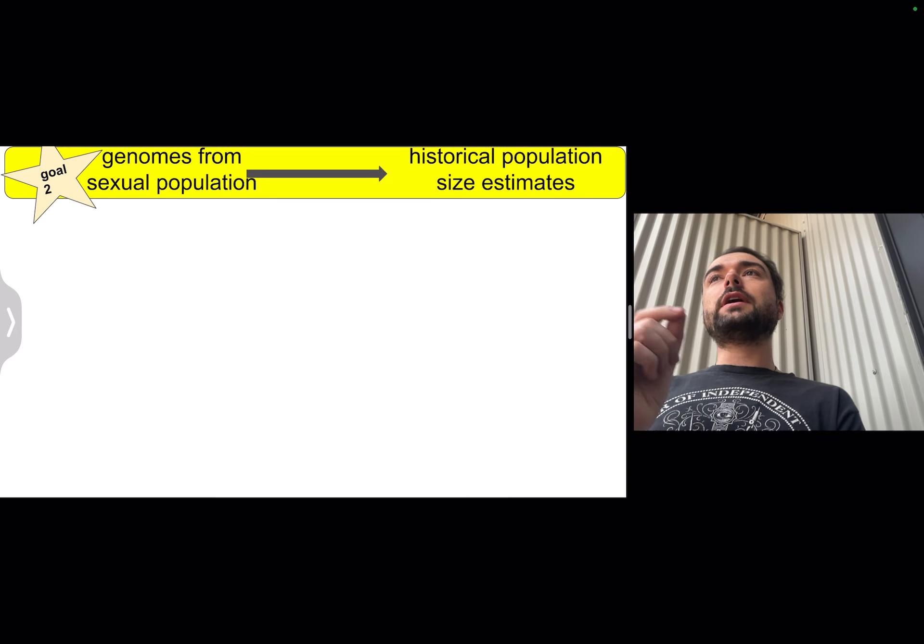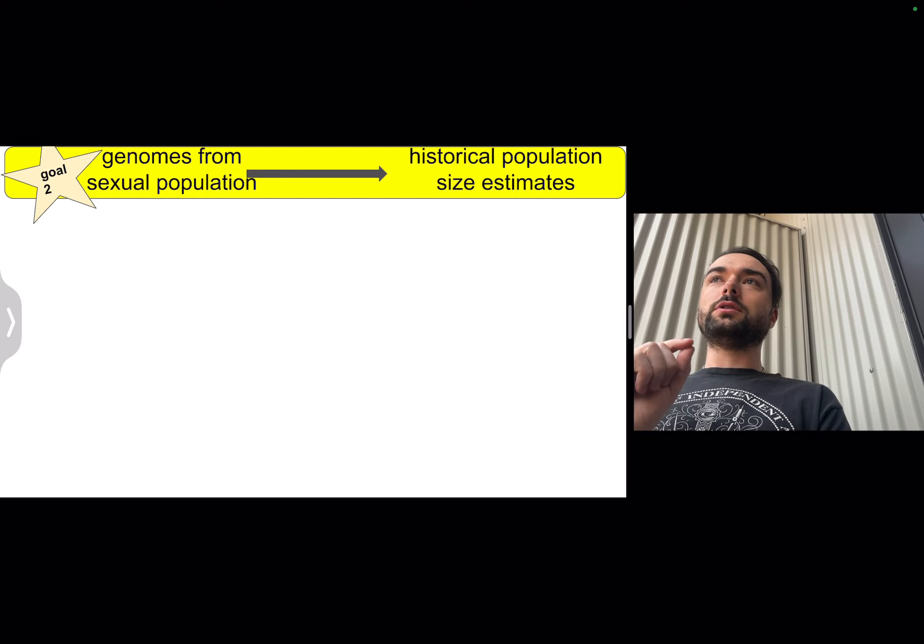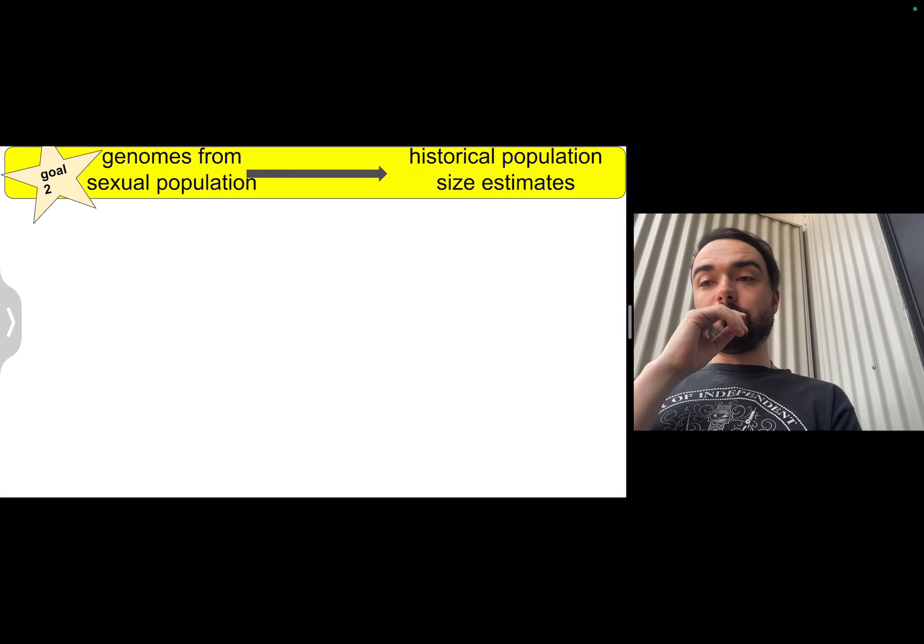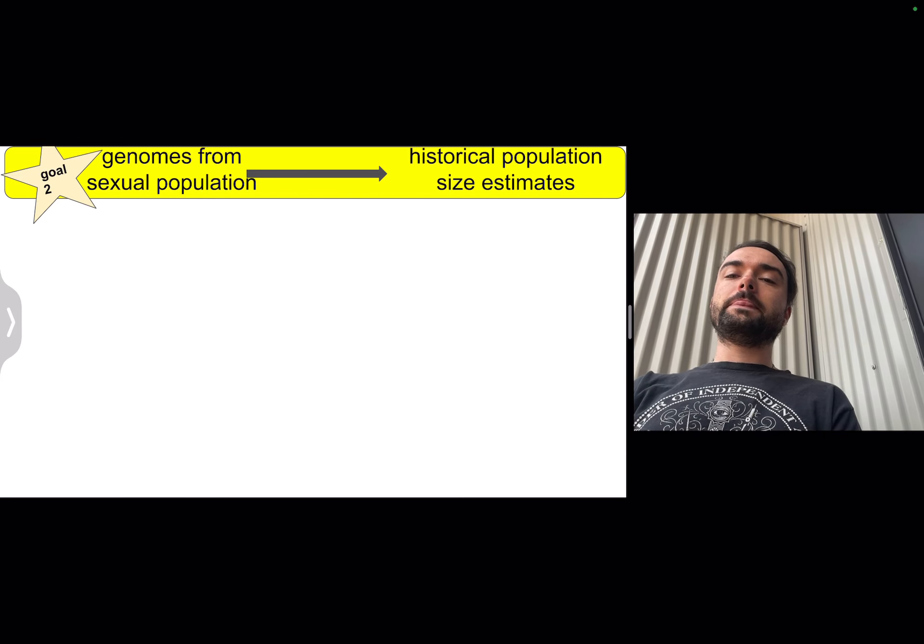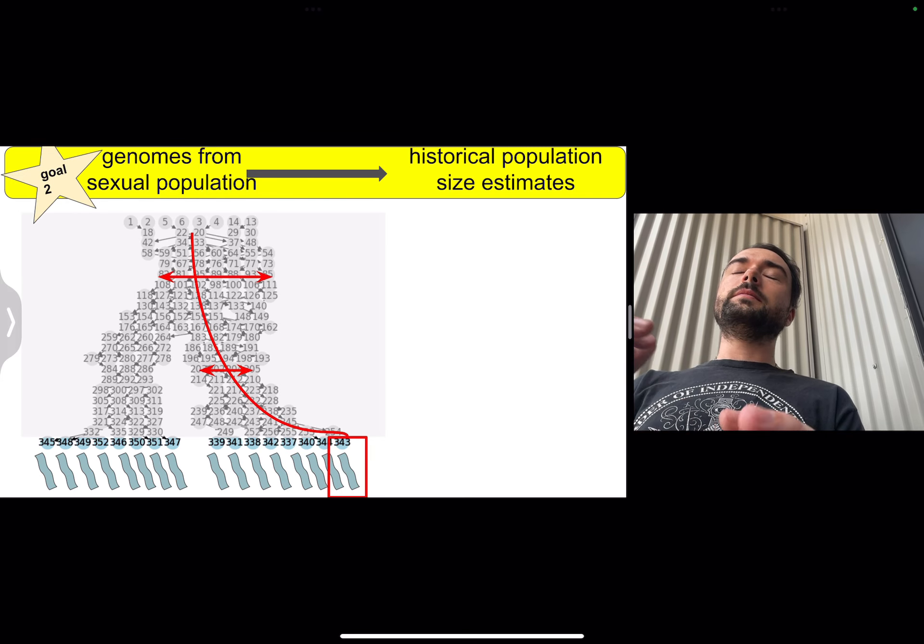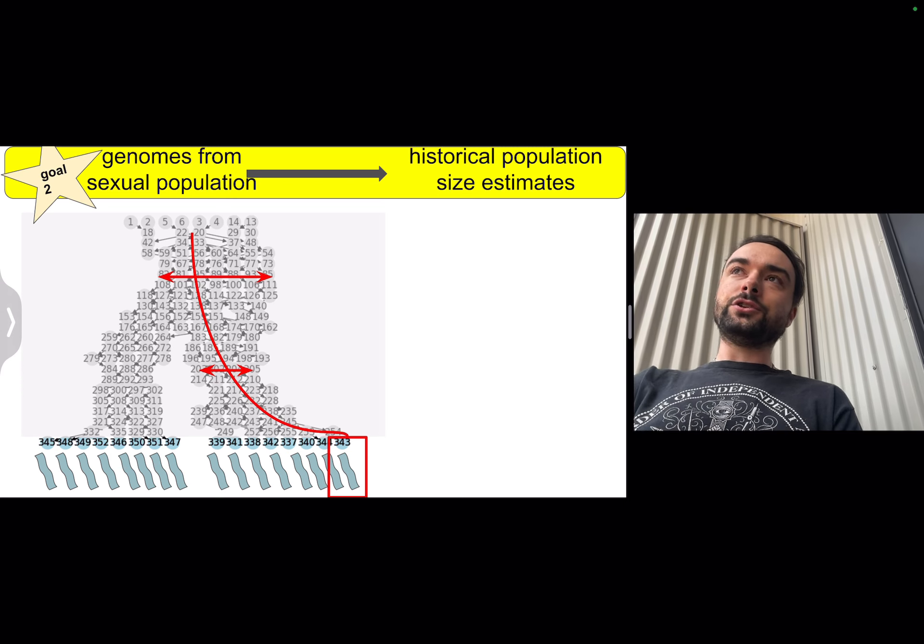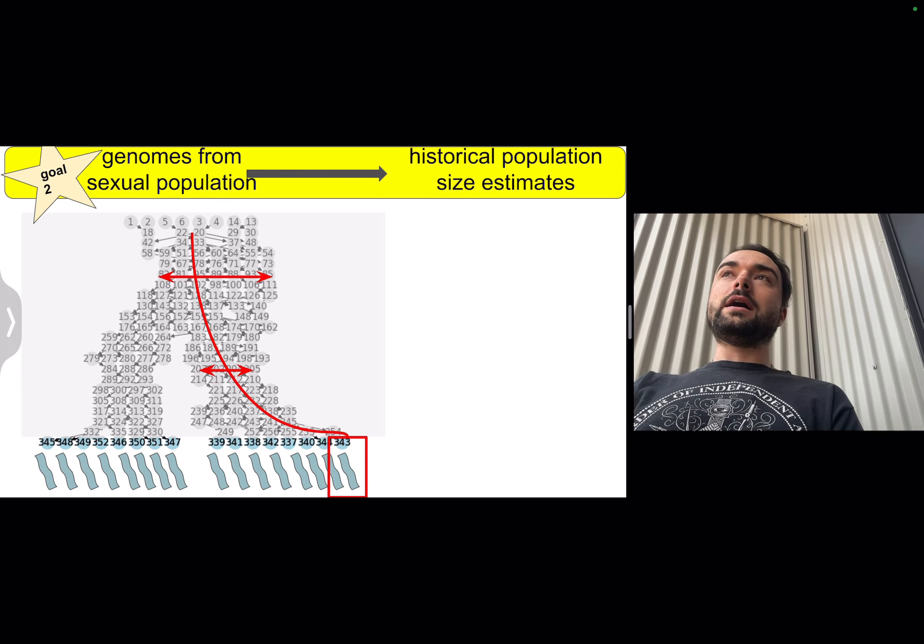It turns out that there's a little bit more information that we can pull out under this inheritance scheme that we've proposed, which is that we can actually get an estimate of population sizes along a lineage of any individual in the extant population.